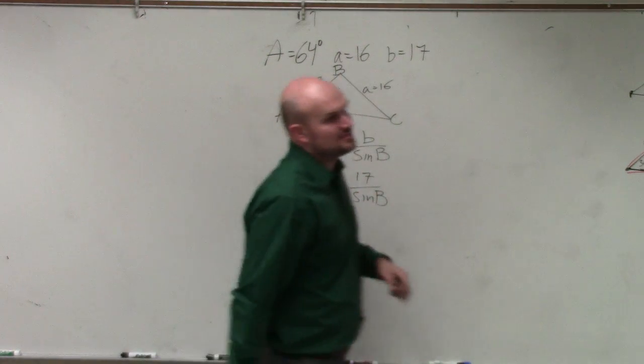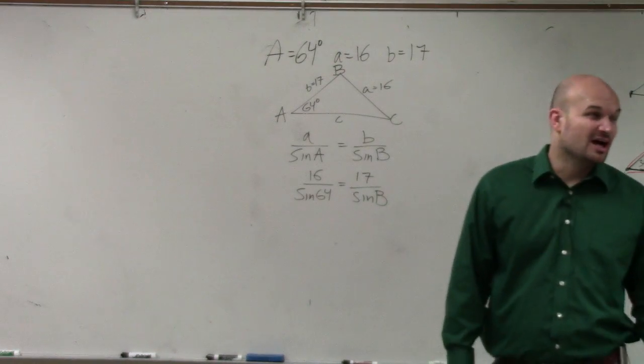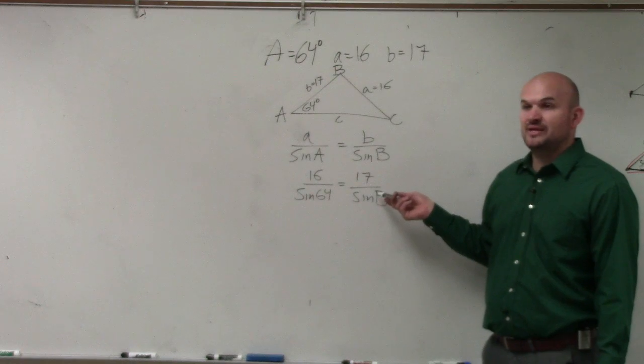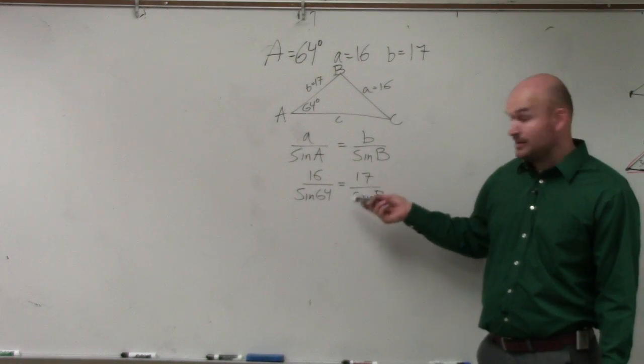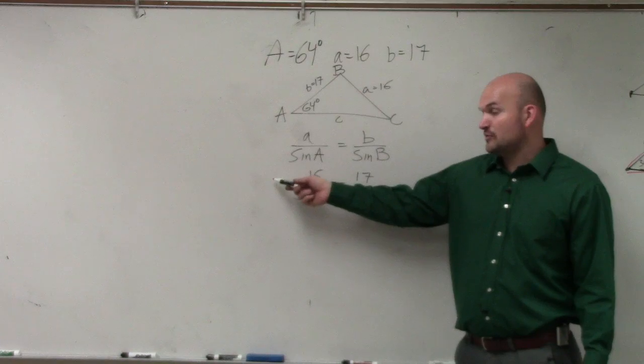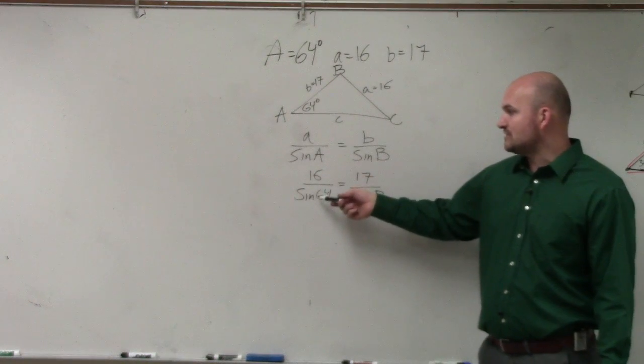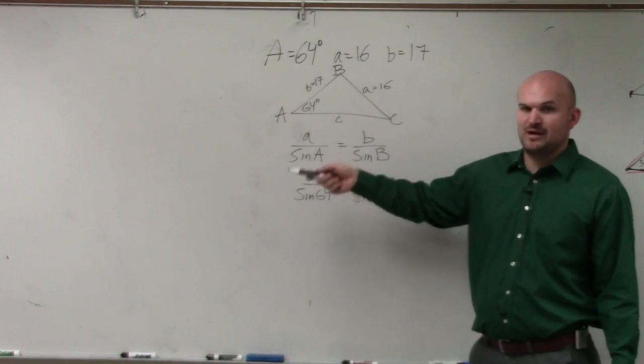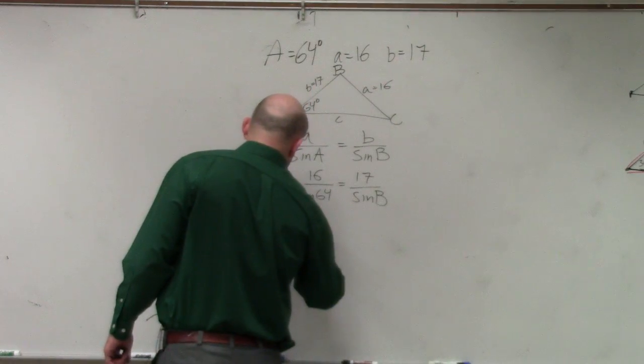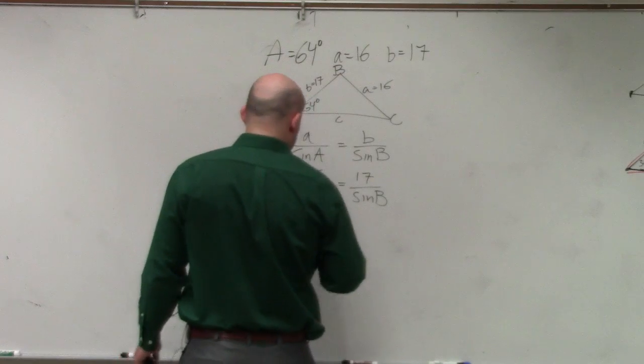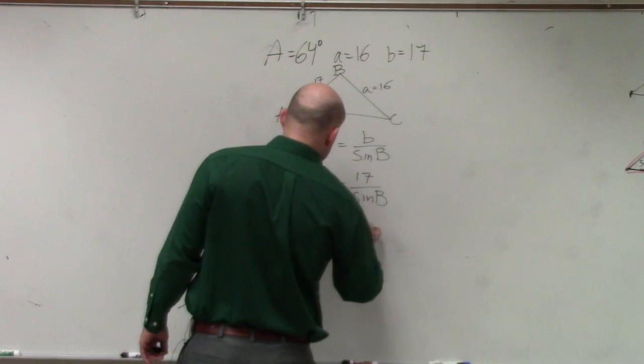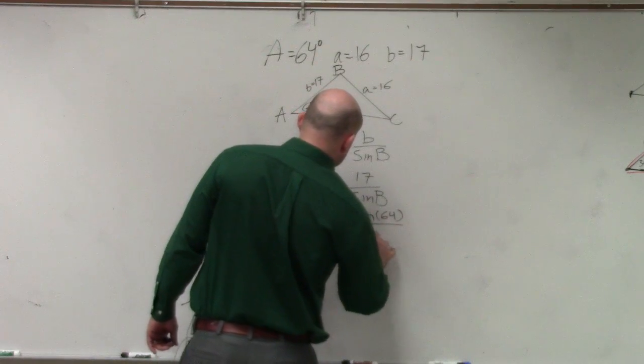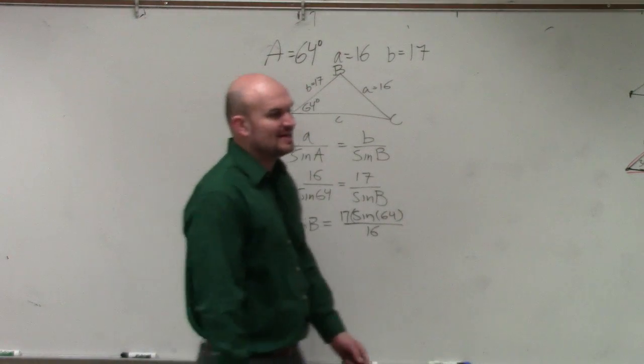So now, I just plug in the information I have. So A is 16 over sine of 64 equals 17 over the sine of b. I don't want to spend all day going over inverse operations. Basically, to solve for sine of b, you'd have to get sine of b off the denominator. So you end up with the sine of b is equal to 17 times the sine of 64 all over 16.